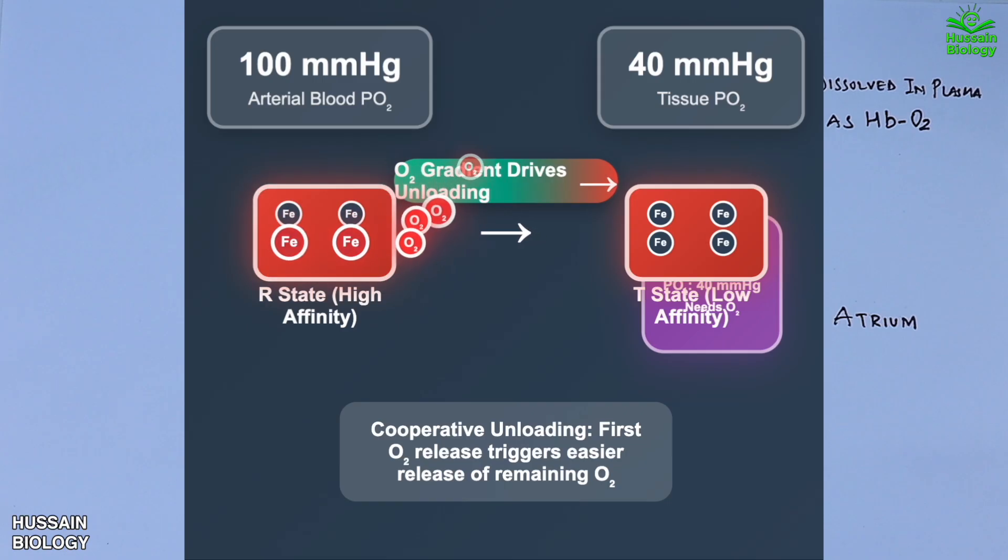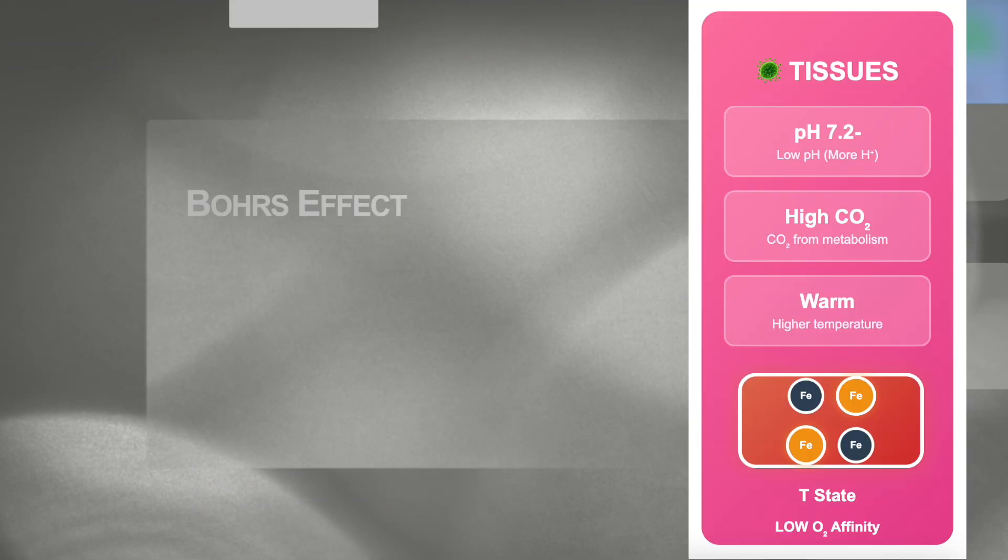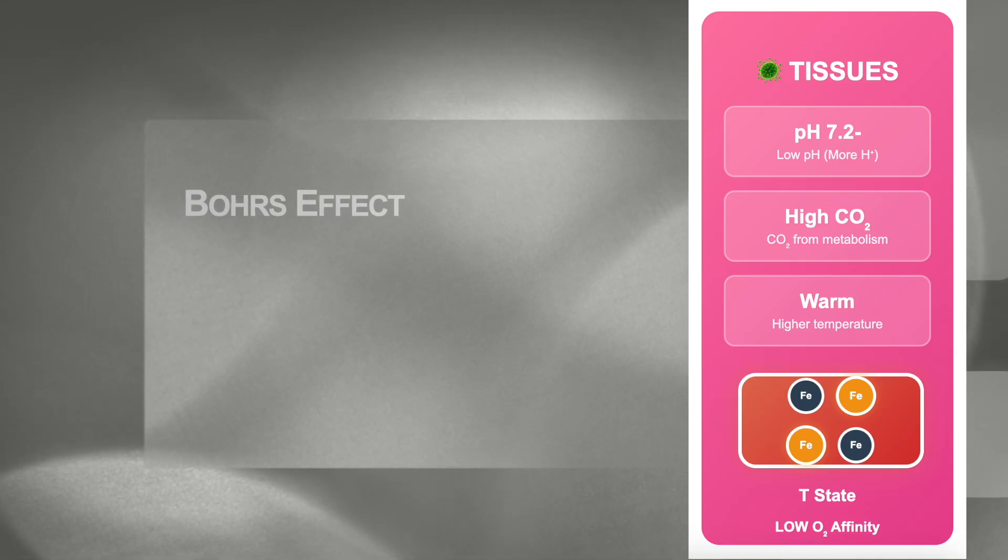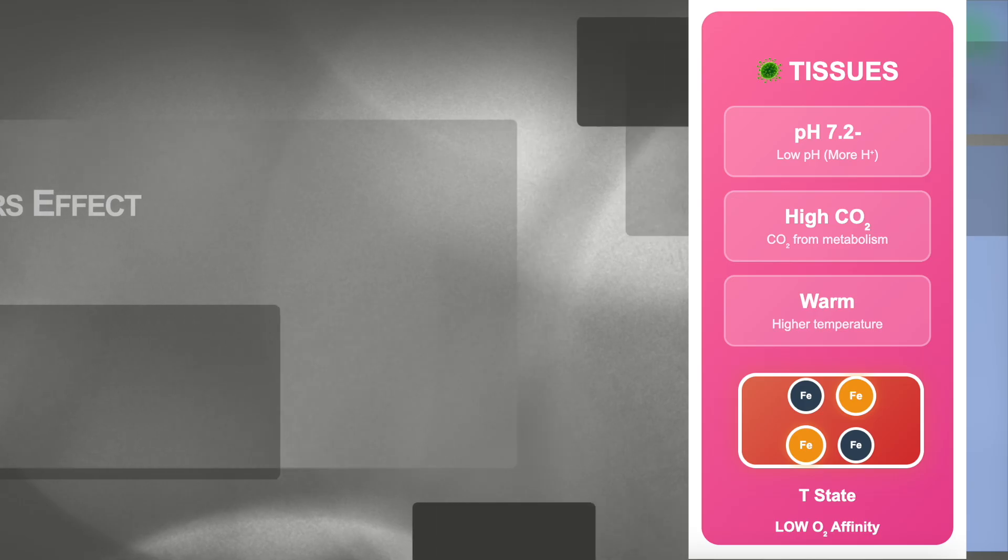The second factor is the Bohr effect. In metabolically active tissues, we see high CO2 levels, low pH, high temperature, and increased 2,3-BPG levels. All these changes stabilize the T state of hemoglobin, further lowering its oxygen affinity and promoting O2 unloading right where the tissues need it most.